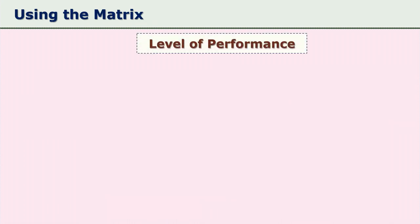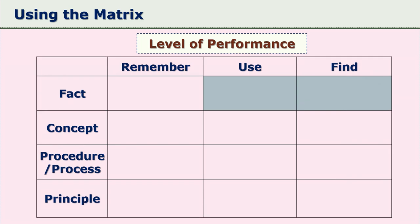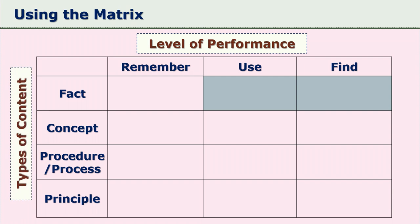Any content showing a cause-and-effect relationship or rules is an example of principles. Looking at the performance-content matrix again, you will notice that the 'use' and 'find' cells for facts are darkened, because facts can only be remembered — they cannot be used in new situations or created. That is why those cells are darkened.